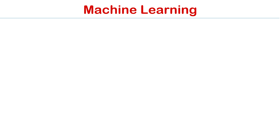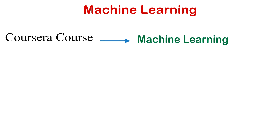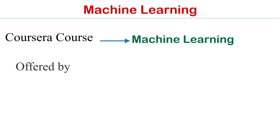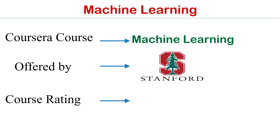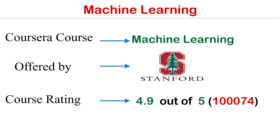Number one, the course name is Machine Learning. It is offered by Stanford University and the course rating is 4.9 out of 5, and the cost of this course is free — yes, absolutely free. The link will be in the description box, so go through it once.